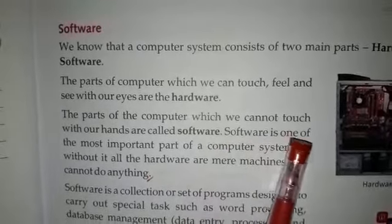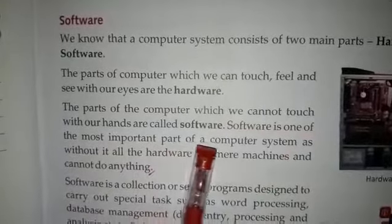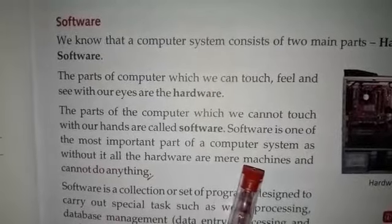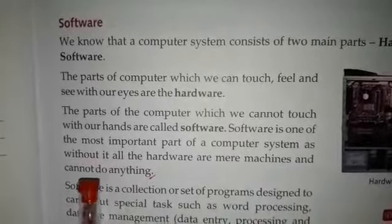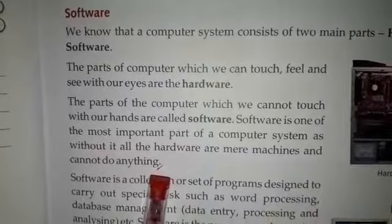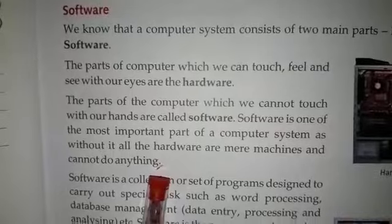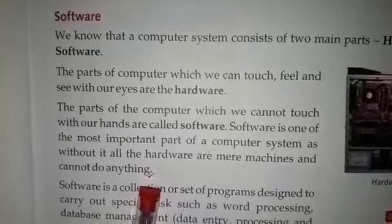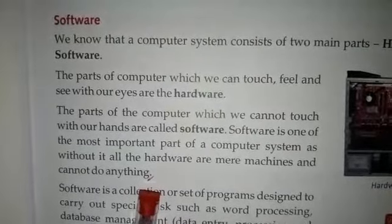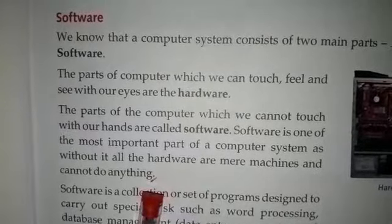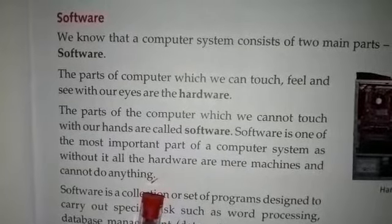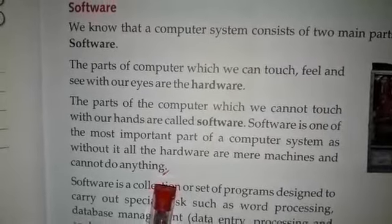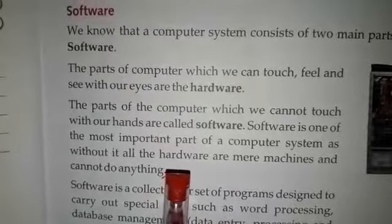Software is one of the most important parts of a computer system, as without it all the hardware are mere machines and cannot do anything. Computer का वह पार्ट जिसे हम अपने हाथों से touch नहीं कर सकते हैं या जिसे हम महसूस नहीं कर सकते हैं, उसे software कहते हैं. Software एक बहुत ही important part of computer है, क्योंकि बिना इसके सभी hardware devices सिर्फ एक machine की तरह हैं और बिना software के वह कुछ नहीं कर सकते.